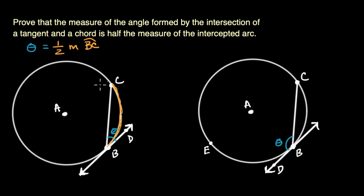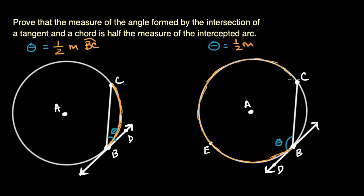In this right scenario, we want to show that theta is equal to half the measure of the intercepted arc. Here we're going to be thinking about the major arc — the intercepted arc goes all the way around. For major arcs, we use three letters to show we're going the long way around, so this is the measure of arc BEC.